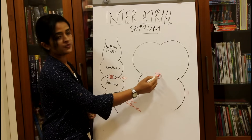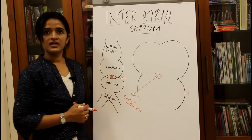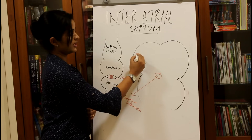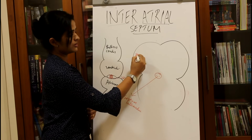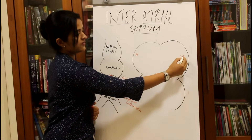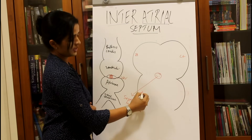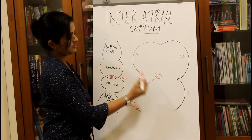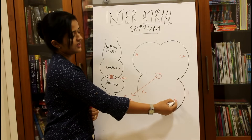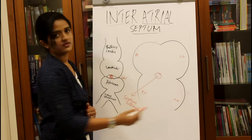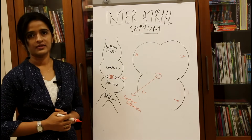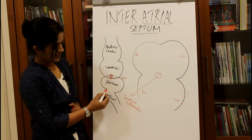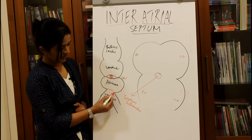We can now mark the future right atrium, future left atrium, future right ventricle, and future left ventricle on the diagram.